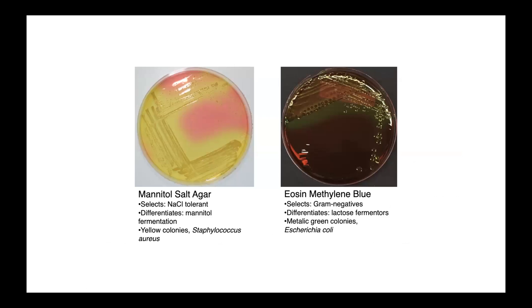Here are some non-proprietary examples. Mannitol salt agar selects for halophilic organisms — those bacteria able to grow at high sodium chloride concentrations — and differentiates those which grow based on their ability to ferment mannitol; mannitol fermenters form bright yellow colonies, with Staphylococcus aureus being one example. Eosin methylene blue selects for gram-negatives and, just like MacConkey, differentiates based on lactose fermentation — we see metallic green colonies, which are classical for E. coli.